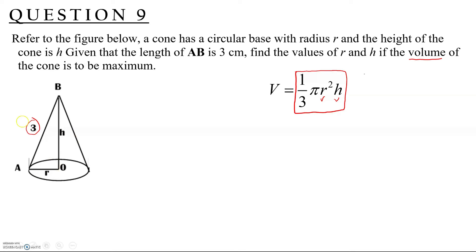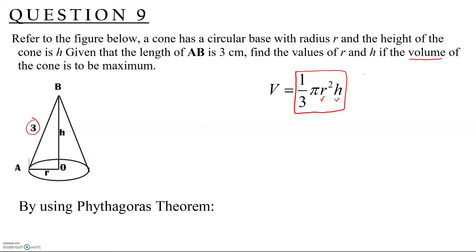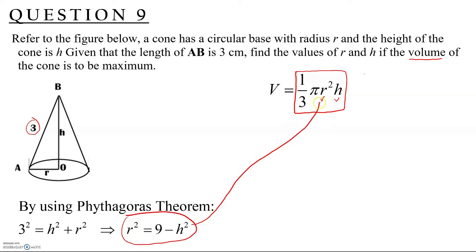We relate H and R using the Pythagorean theorem: 3² = H² + R². Making R² the subject gives R² = 9 − H². We substitute this into the volume formula to get V = (1/3)π(9 − H²)H.